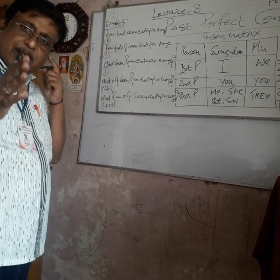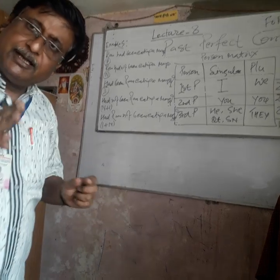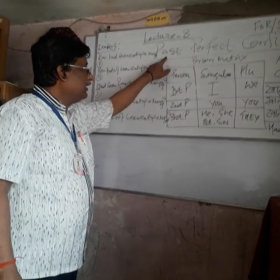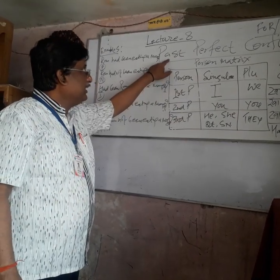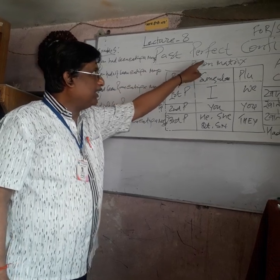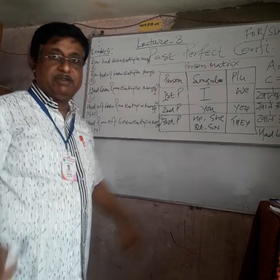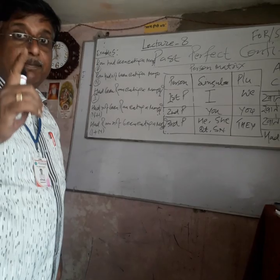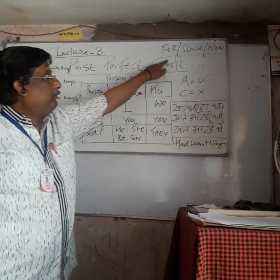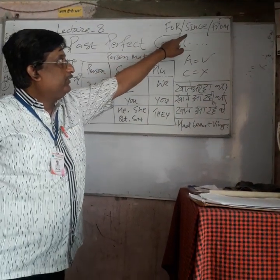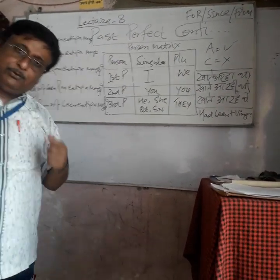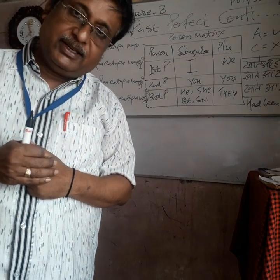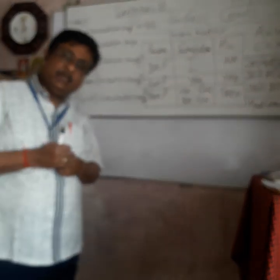Simply we have to add had been + V + ing. In this way we finish the past perfect continuous. One thing to keep in your memory: we will have to use 'for', 'since', and 'from' here, as we used them in the present perfect continuous.